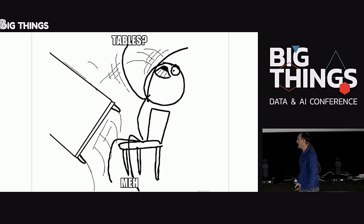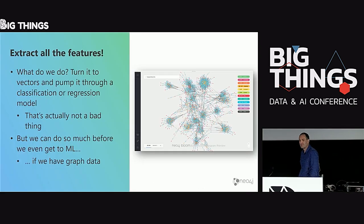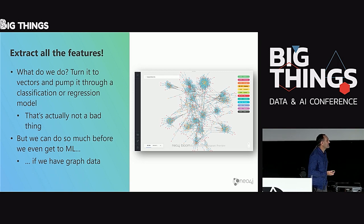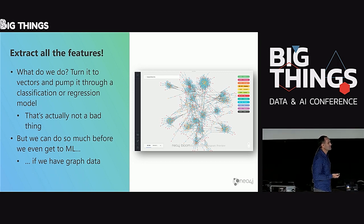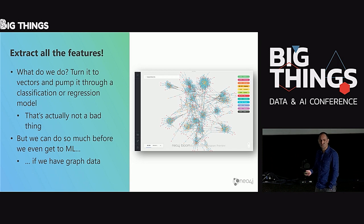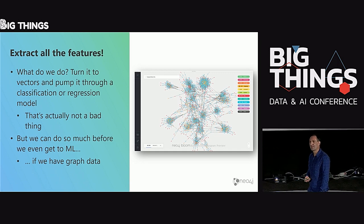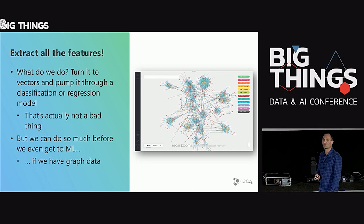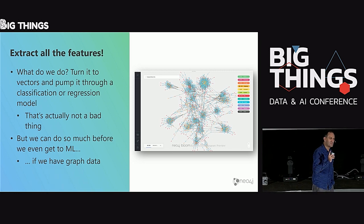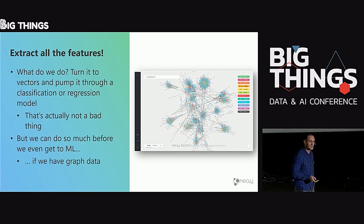Tables — meh. What we do today is so good, but it's not great. I don't think it's the limit of our technological ambition to say that we'll take a table, extract features, turn it into vectors, and pump it through a regression or classification model. It's not a bad thing, but we can do so much more with data if we stop representing it as dull tables and start representing it as rich graphs. That's the fundamental hypothesis for this talk: we can do more with graphs than we can with other kinds of data models.